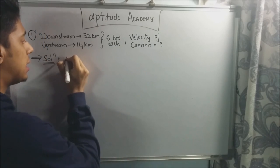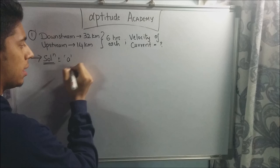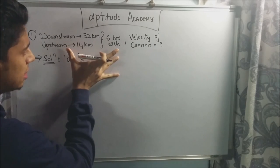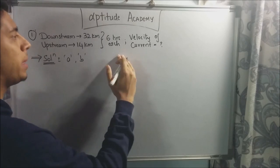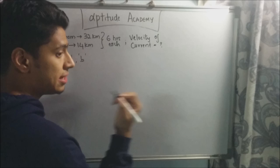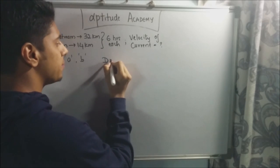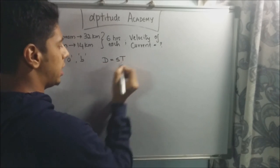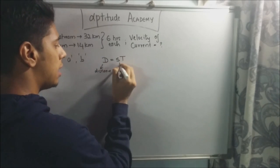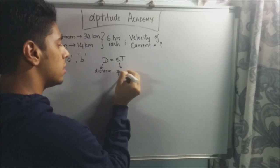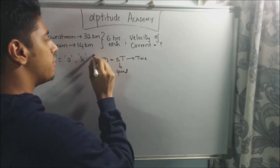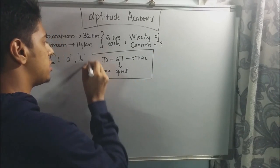Now, in the previous lecture, as I've denoted, the downstream speed is A and the upstream speed is B. What you have to do is find out A and B, and then we can move on to the second part. A very important formula used here is the distance formula: D is equal to S into T, where D is the distance, S is the speed, and T is the time. This is a very important formula when solving Boats and Streams problems.